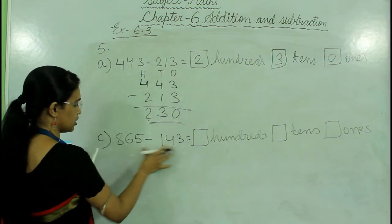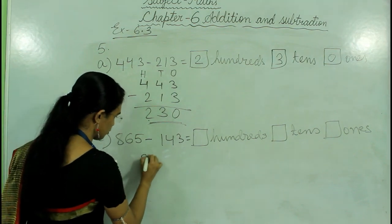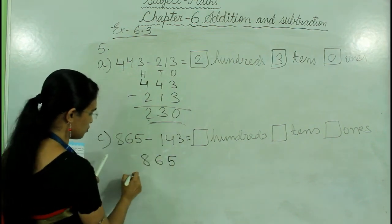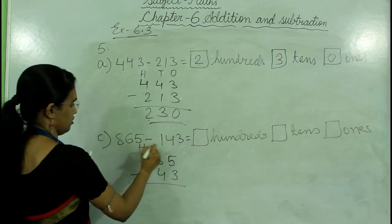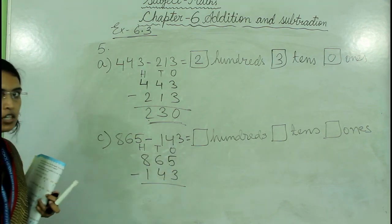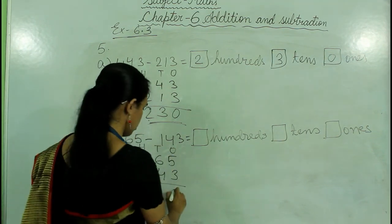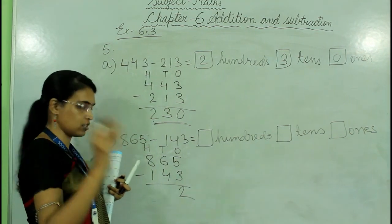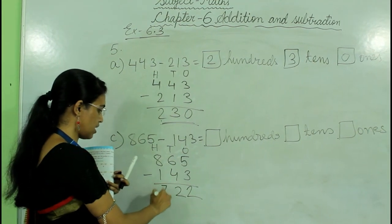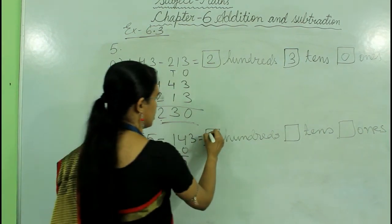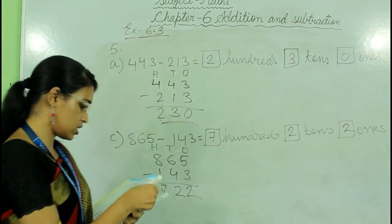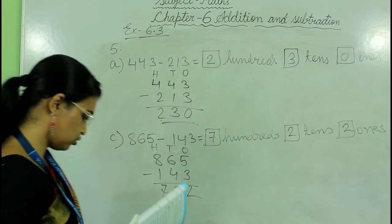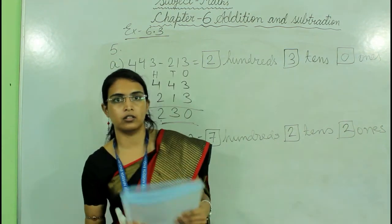Question number C: we have 865 minus 143. Write 865, then subtract 143. Ones: 5 minus 3 is 2. Tens: 6 minus 4 is 2. Hundreds: 8 minus 1 is 7. The answer is 722 — that is 7 hundreds, 2 tens, 2 ones. Do question number B in this way as your homework. Thank you.